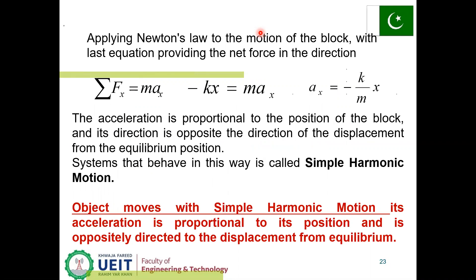Applying Newton's second law to the motion of the block: ΣFx = max, so −kx = max, giving ax = −(k/m)x. The acceleration is proportional to the position of the block and its direction is opposite to the direction of displacement from the equilibrium position. A system that behaves in this way exhibits simple harmonic motion; the object's acceleration is proportional to and oppositely directed relative to its displacement from equilibrium.